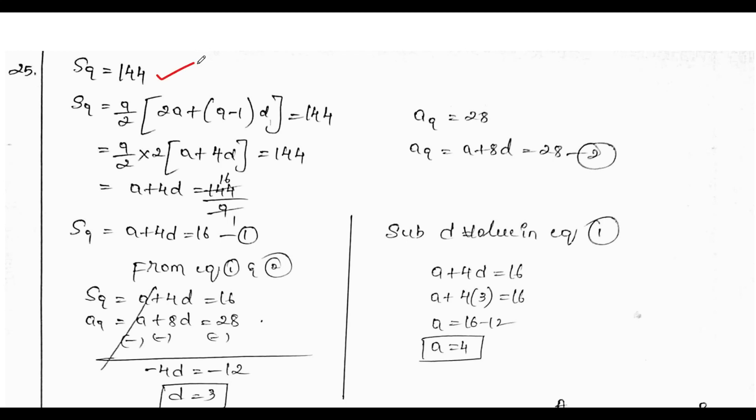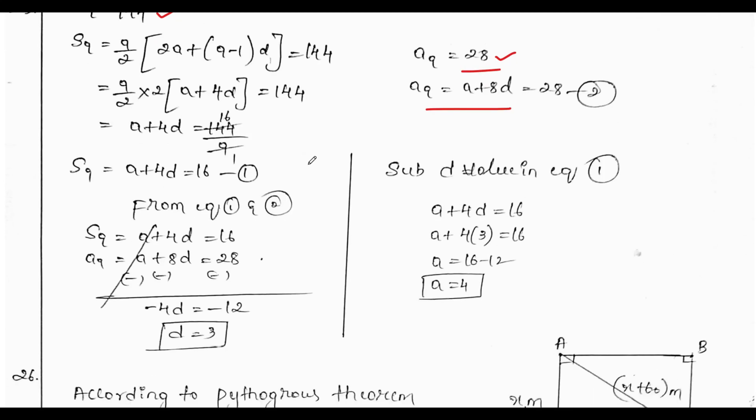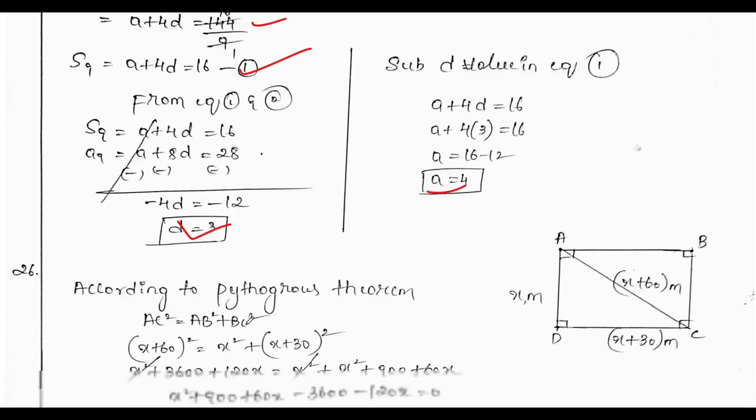Next, given sum of 9 terms is 144, then sum of 9 terms is 28. Using these two linear equations, equation 1 and 2, if we solve, we get a equals 4 and d equals 3.